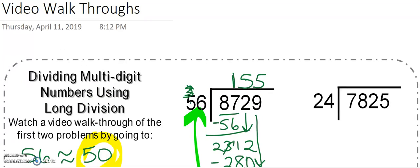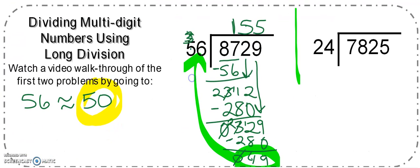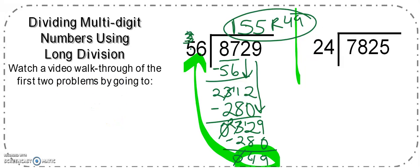Which means we have a remainder of 49, R49. Awesome. So let's use that exact same strategy over here with this next problem. I'm going to change colors so it's easy to see. We have 7825 divided by 24. So let's look at 24. How many groups of 24 can I make with 7? Well, I can't make any. 7's not big enough. So let's go next door and grab 78.